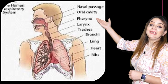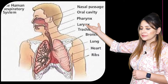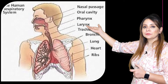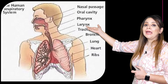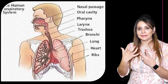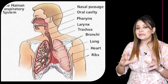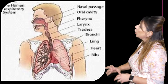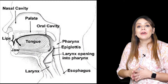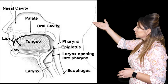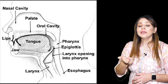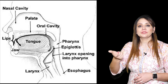The nasal cavity leads into a tubular structure called the nasopharynx. The mouth, also called the buccal cavity, leads into a tubular structure called the oropharynx. The nose and mouth are actually interconnected — the nasopharynx and oropharynx unite to form a common tubular structure called the pharynx.